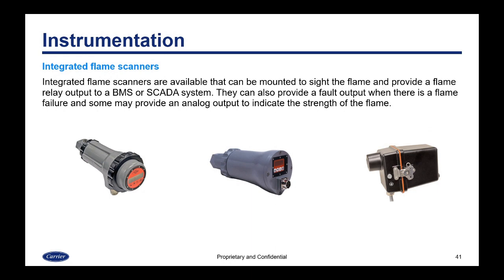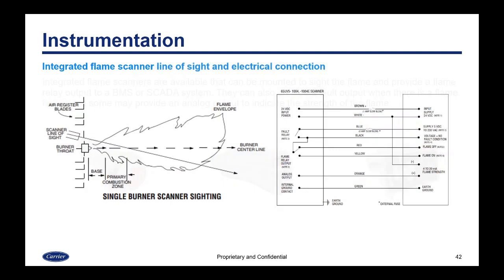Integrated flame scanners are available that can be mounted to sight the flame and provide a flame relay output to a BMS or SCADA system. They can also provide a fault output when there's a flame failure, and some may provide an analog output to indicate the strength of the flame. An integrated flame scanner is going to have outputs for the fault relay and the flame relay output, a power supply input, an analog output, and the schematic shows the scanner sighting from the scanner tube into the flame.